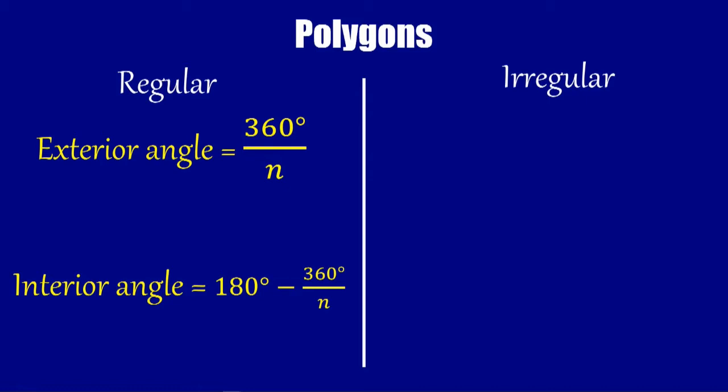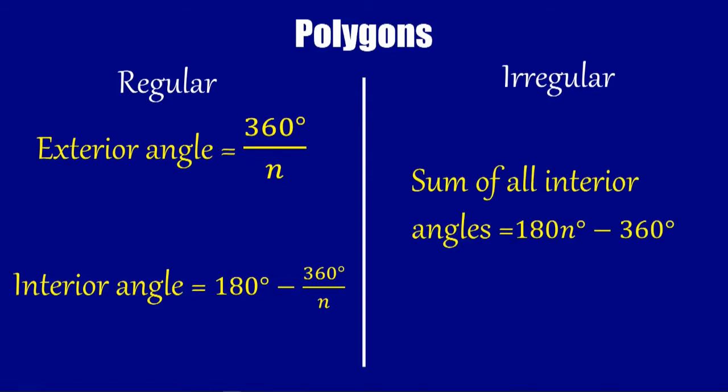And for any polygon, including all the irregular polygons, if you would like to work out the sum of all the interior angles, it is 180N minus 360. So 180 times the number of sides the polygon has, and then subtract the 360 - remember those angles at the centre. But rather than remember those formulas, think about the way they are derived.